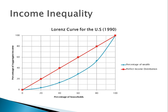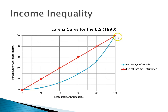The last topic in this chapter is related to income inequality. Income is not equally distributed in America, and this can be modeled on a Lorenz curve. The curve shows which percentage of Americans own what percentage of the total income. The x-axis shows the percentage of households, and the y-axis shows how much income they own. The line of perfect income distribution shows that the lowest 20% own 20% of wealth, 40% own 40%, and so on up to 100%.